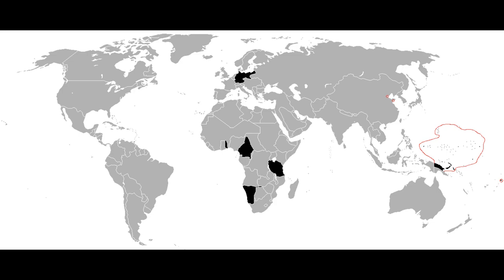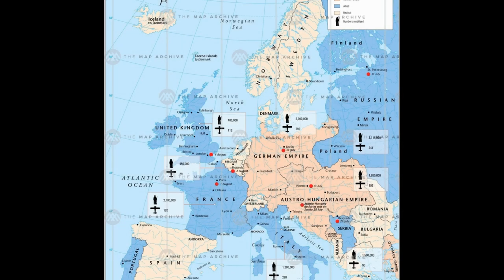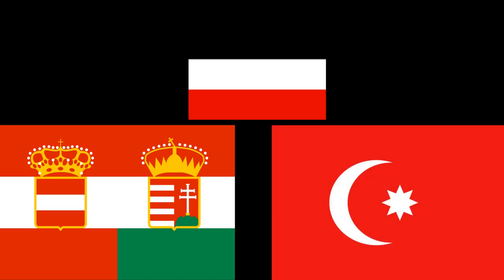Germany was producing two times as much steel as Britain. Before then, Britain was the largest exporter of industrial goods for the last hundred years. Germany had also become one of the strongest land forces, leading to growing tensions over a war in Europe. By 1914, Germany held a very large portion of land in Western, Eastern, and Central Europe. It had alliances with Austria-Hungary since 1879 and the Ottoman Empire since 1914, which helped it during the war.